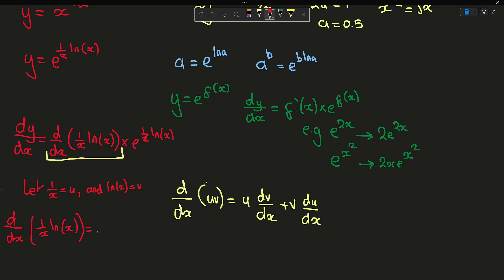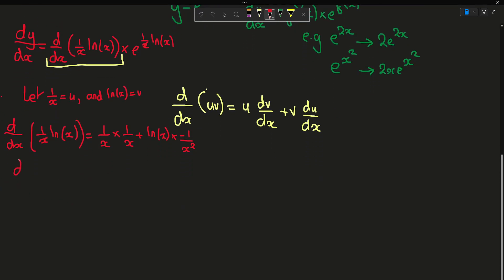So now what we can do is we can use this formula and now do d dx of 1 over x ln x. ln x is equal to, so 1 over x and then the derivative of natural log is also 1 over x. And now this can be plus natural log of x multiplied by minus 1 over x squared.